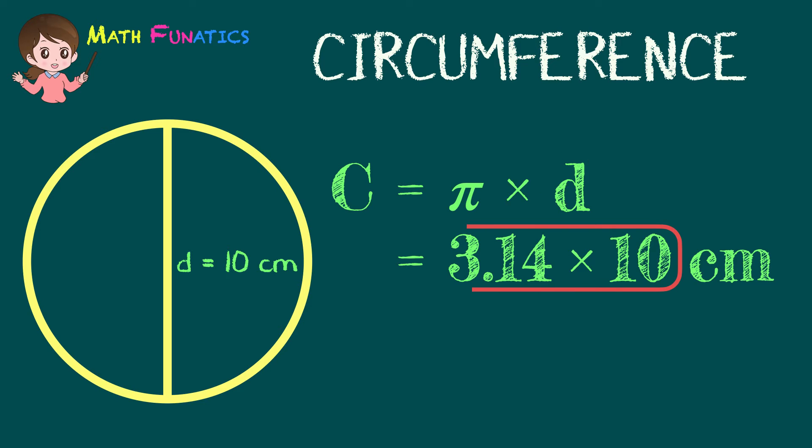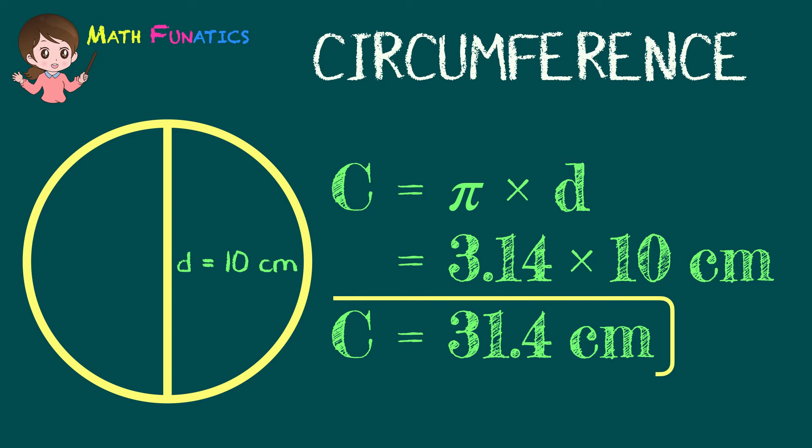Then multiply 3.14 by 10 to get 31.4 centimeters. Therefore, the circumference is equal to 31.4 centimeters.